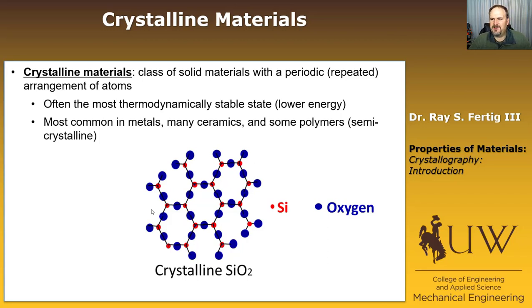Crystalline materials are common in many ceramics, not all, but many. And then there are some polymers that are considered crystalline, although I would call them semi-crystalline. They form a repeated structure, but it's not quite the same repeated structure as what we're going to see with other classes of materials.